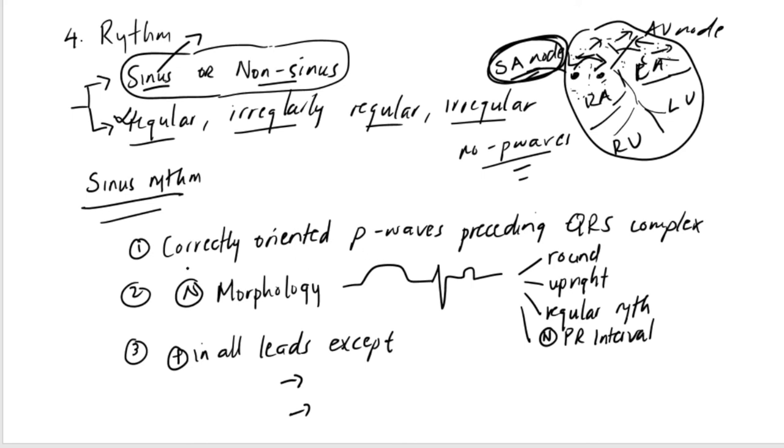Now, what are the characteristics that the rhythm has to be categorized for it to be sinus? There has to be P waves, but they have to be correctly oriented, which means number one, they have to precede QRS complexes absolutely. But correctly oriented, we mean the normal morphology. It has to be a nice, round, smooth P wave.